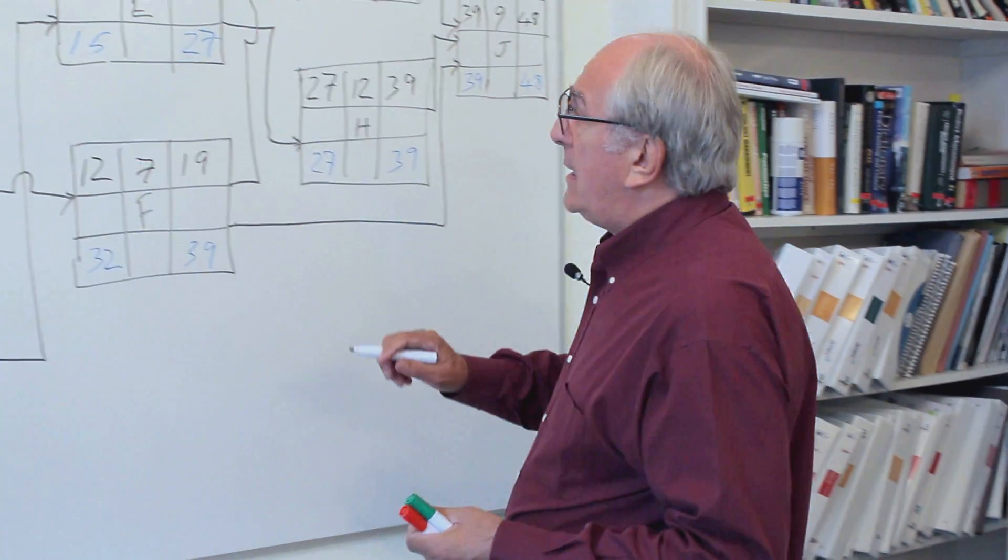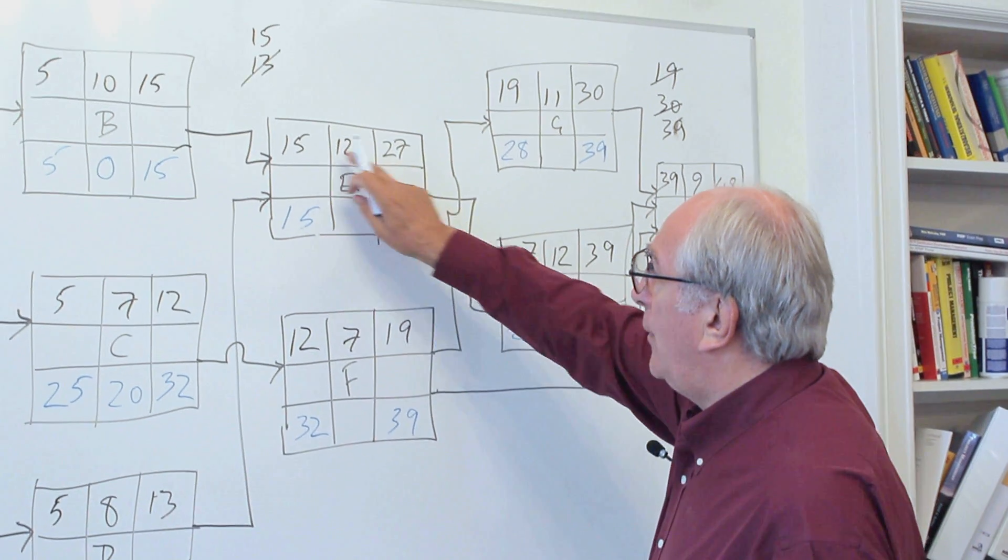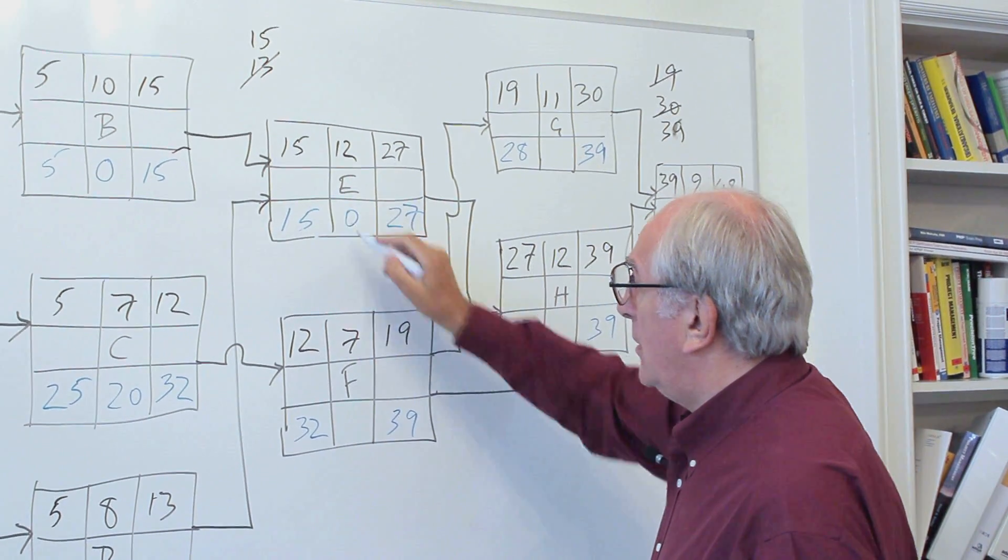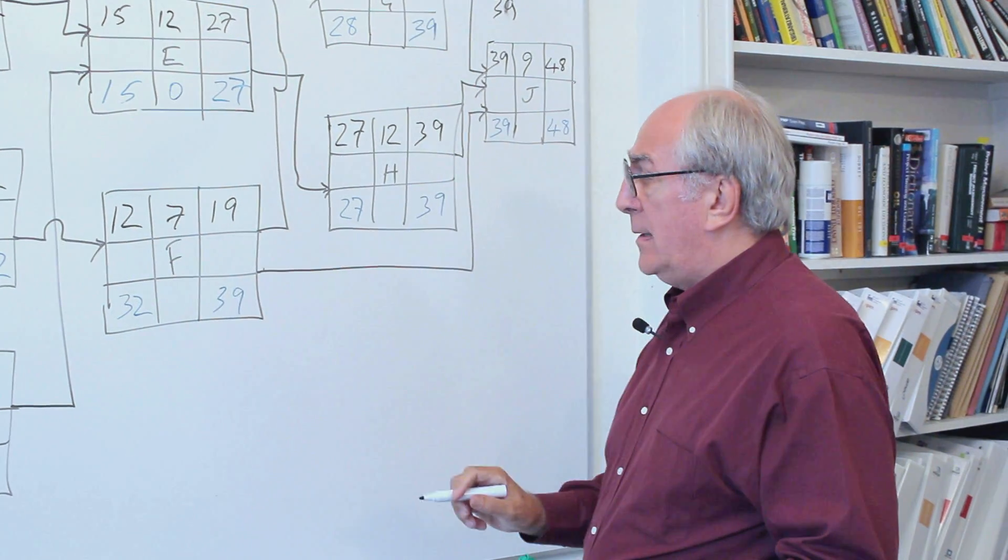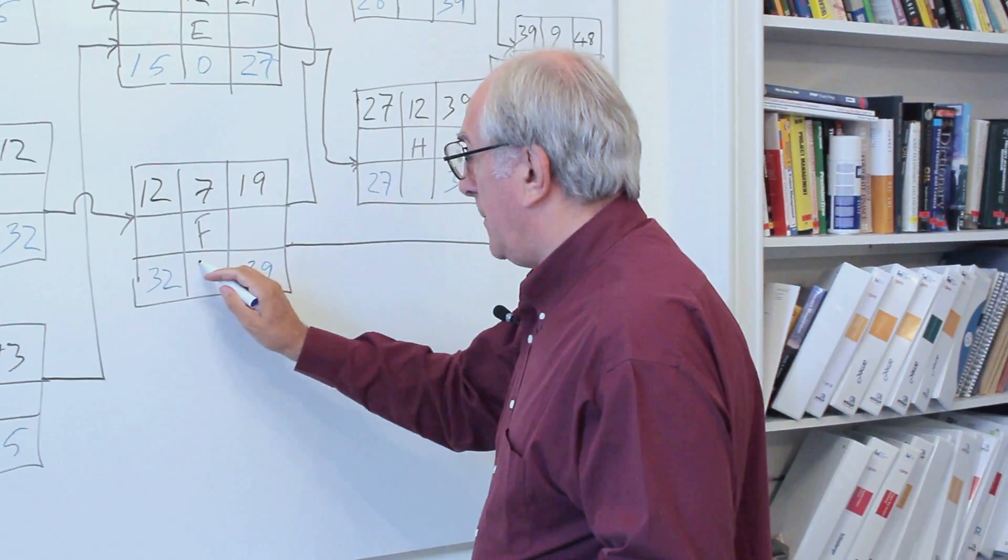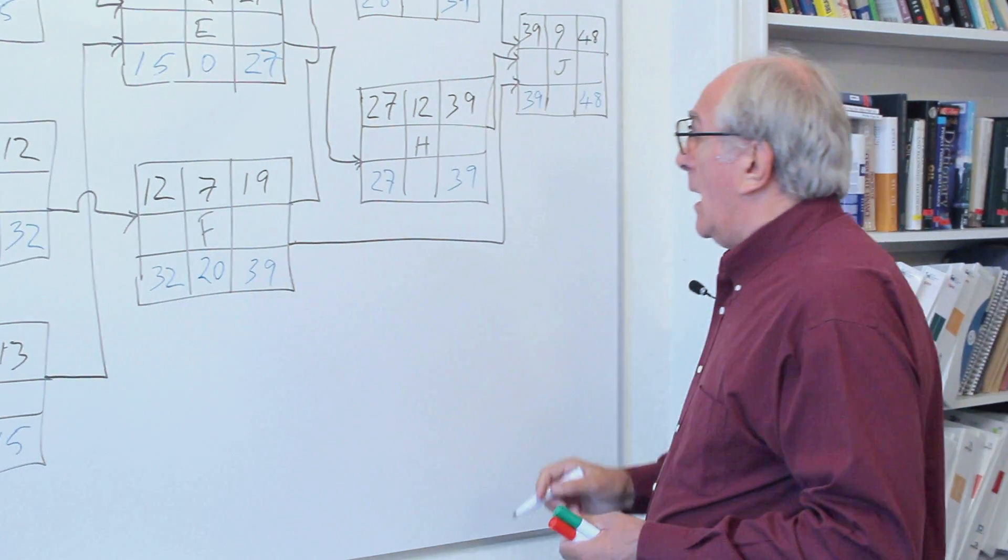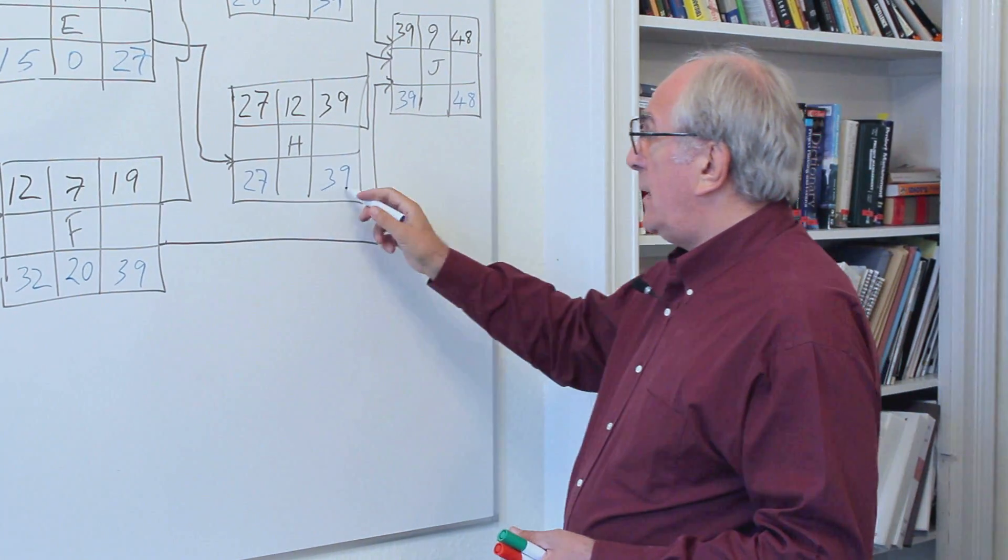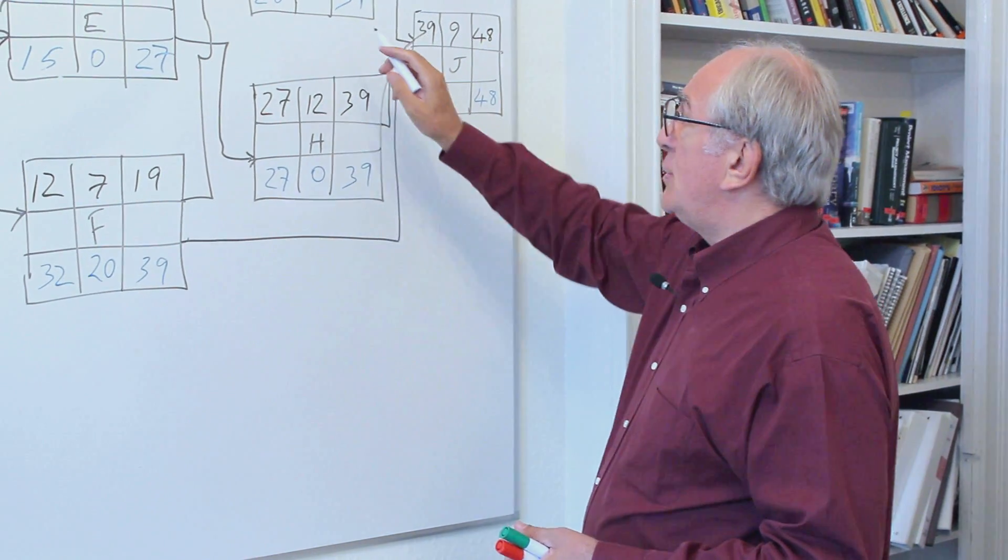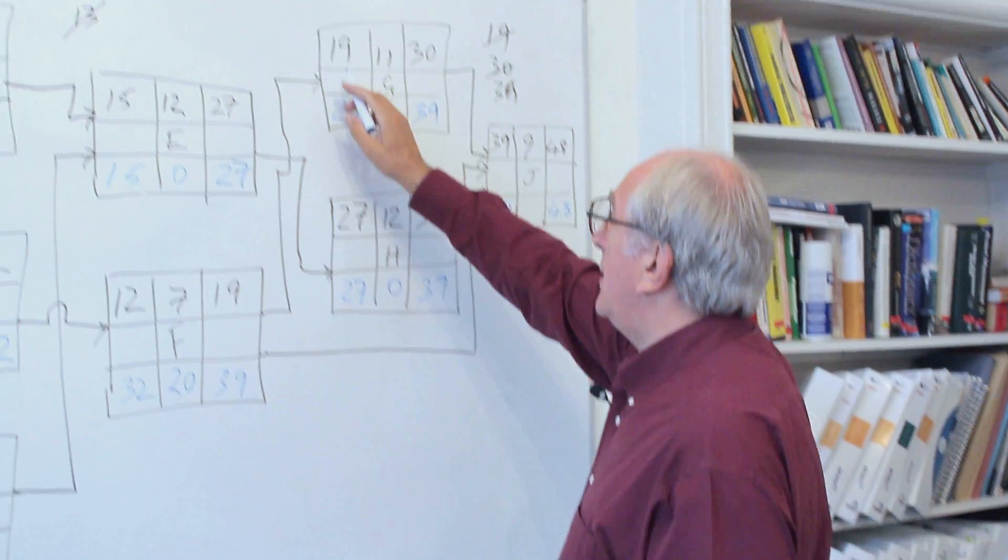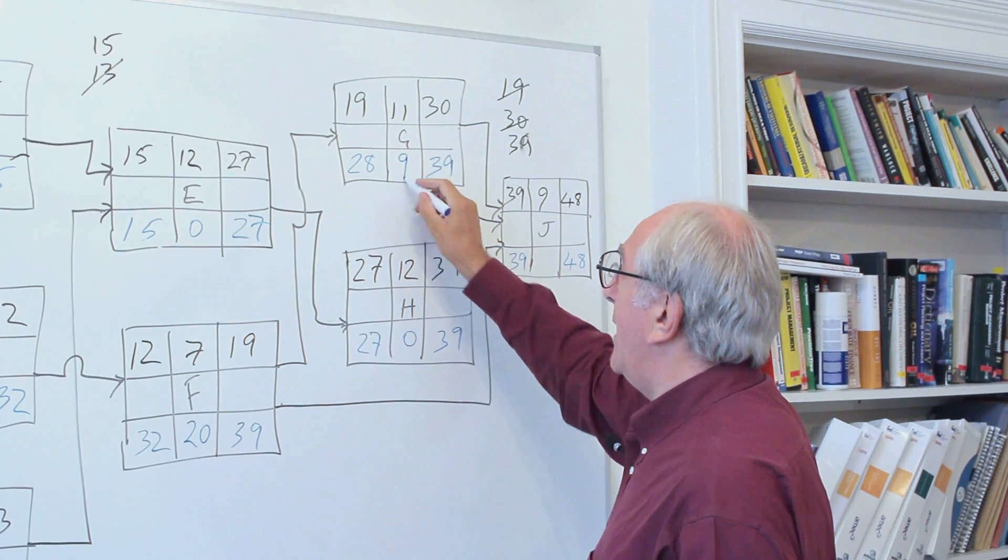Looking at activity E, you've got twenty-seven minus fifteen minus twelve, which is zero. And for activity F, it's thirty-nine minus twelve minus seven, which is going to give us twenty. Activity H is thirty-nine minus twenty-seven minus twelve equals zero. And G is thirty-nine minus nineteen minus eleven, which is going to give us nine.